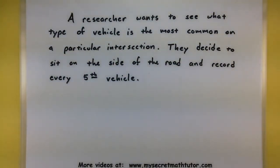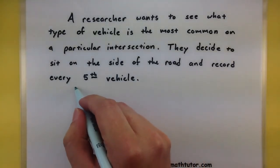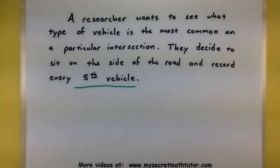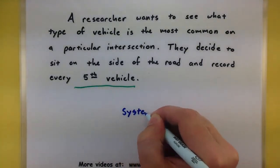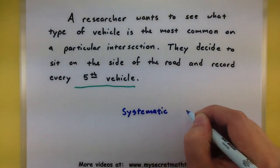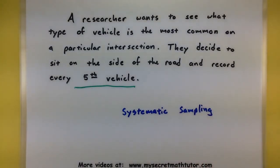Here we have a researcher that wants to see what type of vehicle is the most common at a particular intersection. They decide to sit on the corner of the road and simply record every fifth vehicle. Notice how they have some sort of system in place — they want to pick every fifth vehicle as they watch them go down the road, so it's not random. This is an example of a systematic sample, with a system in place ensuring they record every fifth one.